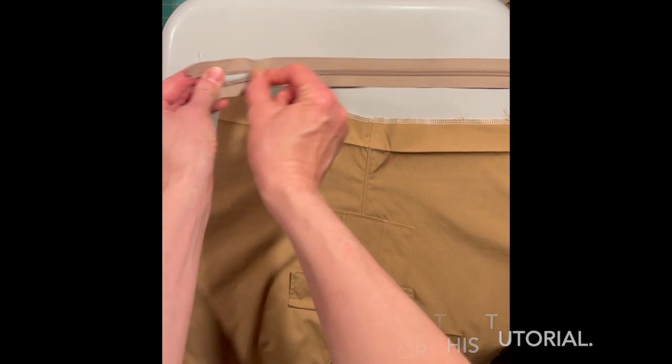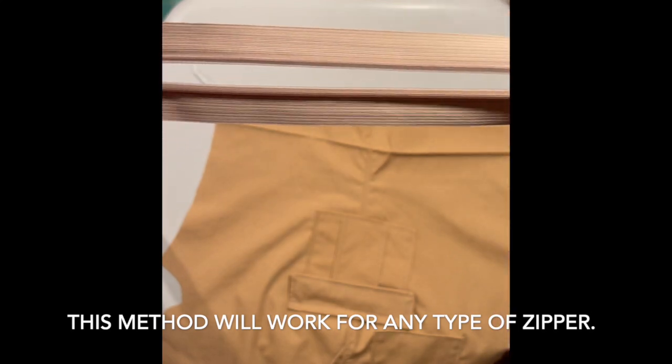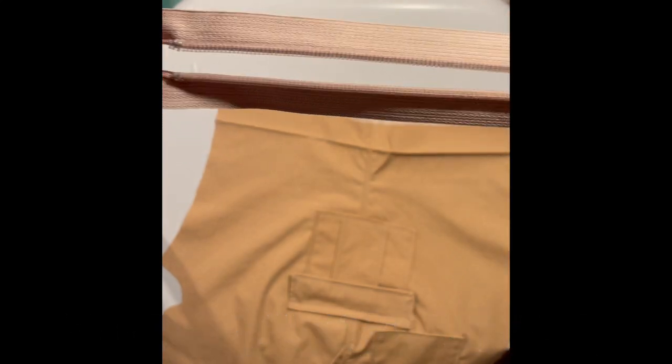First thing you do before you shorten a zipper is pull your zipper pull down, away toward the stop, away from the part that you're going to cut off.